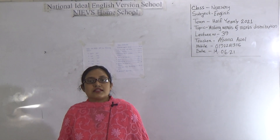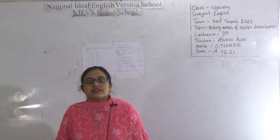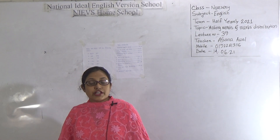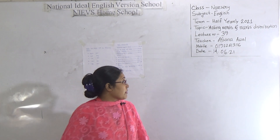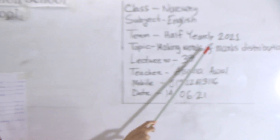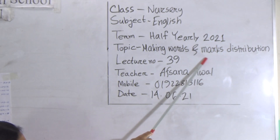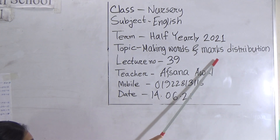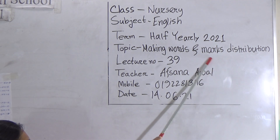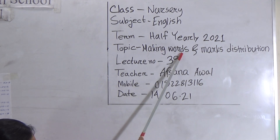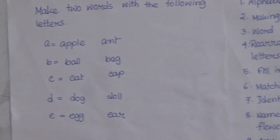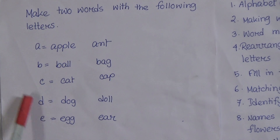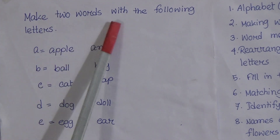Dear students, this is Aksana. Today I will take your English class. Our today's topic is making words and marks distribution for the half-year examination — that means the practice-based half-year examination marks distribution and making words with five letters, A to E. First, we will revise making words: make two words with the following letters.